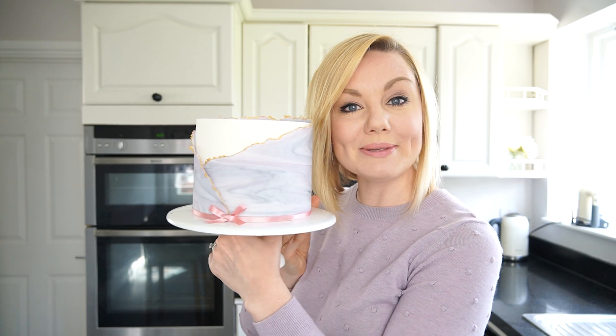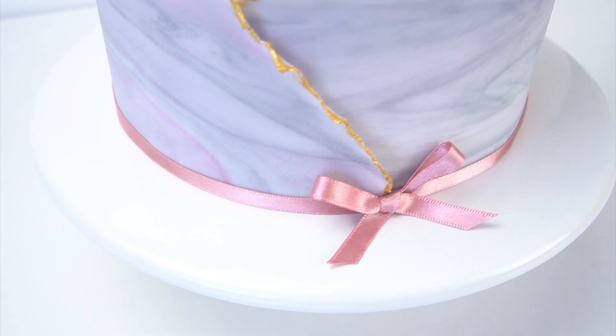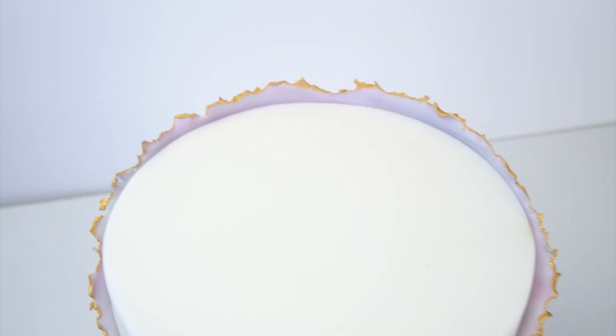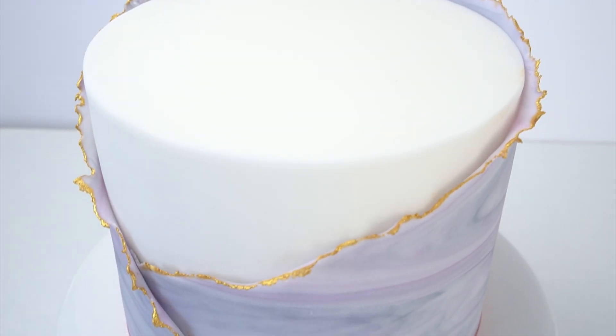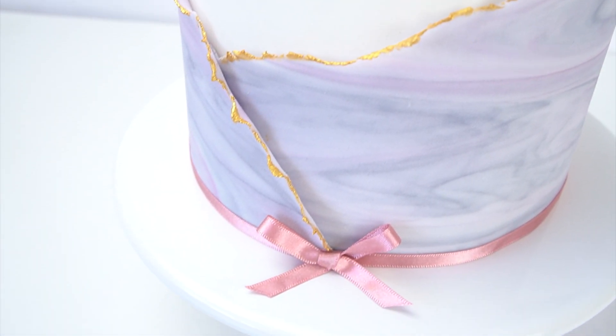Hi guys and welcome back to my kitchen. On today's video I have another techniques tutorial for you. If you're looking for a new style to add onto your cakes, I'm going to be showing you how you can create these torn fondant wraps to go around the outside. These look so pretty on birthday cakes or wedding cakes and you can make them in any color to match the theme of your cake.